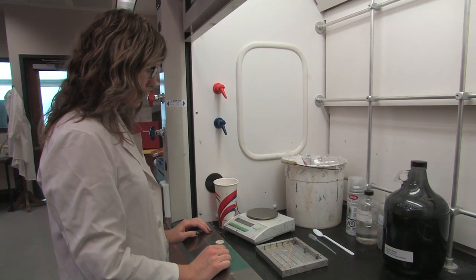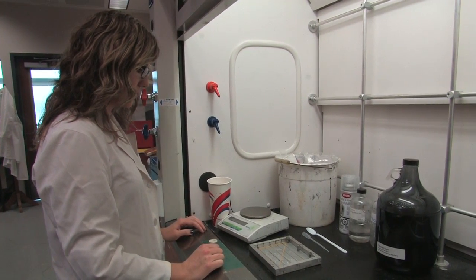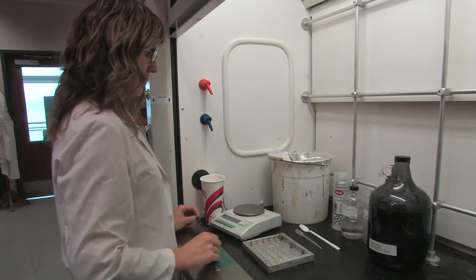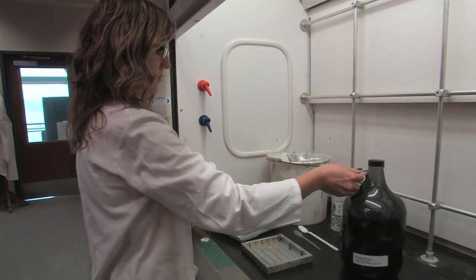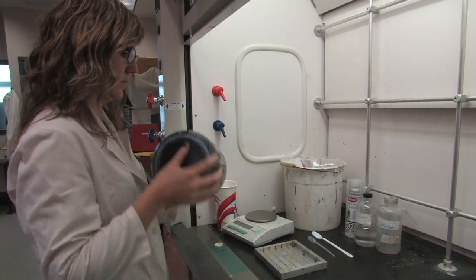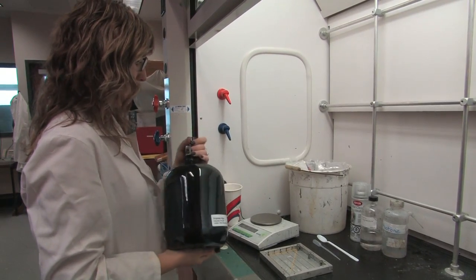Next, we measure out the epoxy and hardener. All pouring of epoxy resin is done under the fume hood. A solution of clear casting epoxy pigmented black with 100 milliliters of pigment has been premixed. Be sure to shake the epoxy to make sure the dye is distributed evenly.